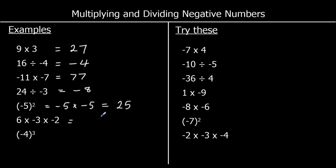Now we have 6 times negative 3 times negative 2, and we can do this in two steps. First, 6 times negative 3: a positive times a negative is negative, and 6 times 3 is 18, so we've got negative 18 times negative 2. A negative times a negative is positive, and 18 times 2 is 36.